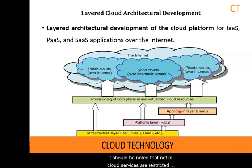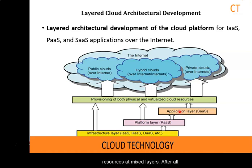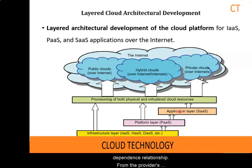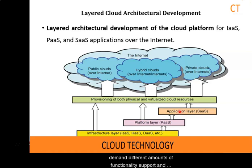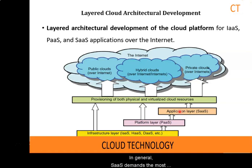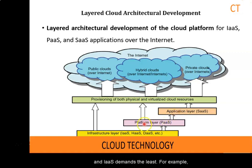Not all cloud services are restricted to a single layer; many applications may apply resources in a mixed layer. The three layers are built from bottom up with a dependent license. From the provider perspective, services at various layers demand different amounts of functionality support and resource management. In general, software services demand the most work from providers, platform services fall in the middle, and infrastructure services demand the least.